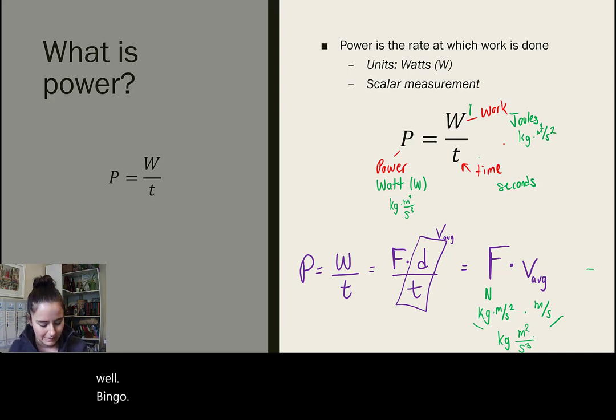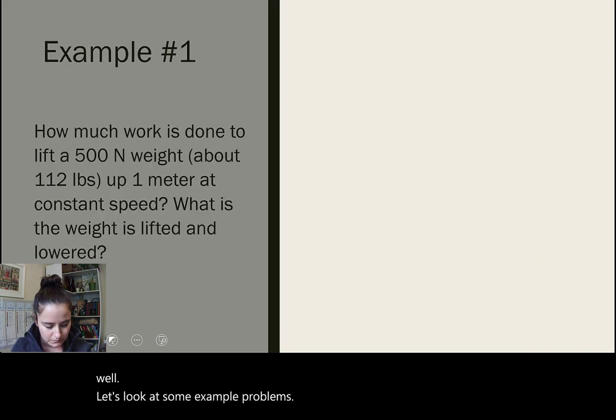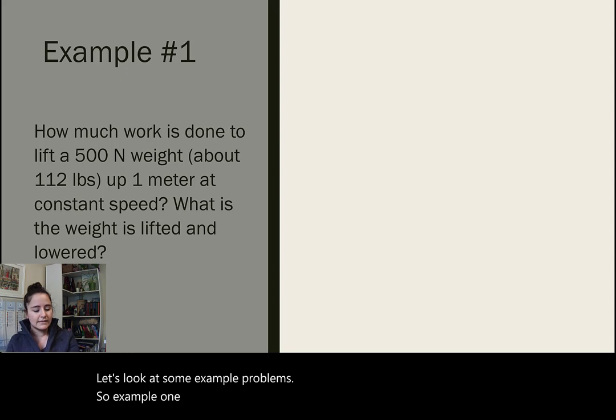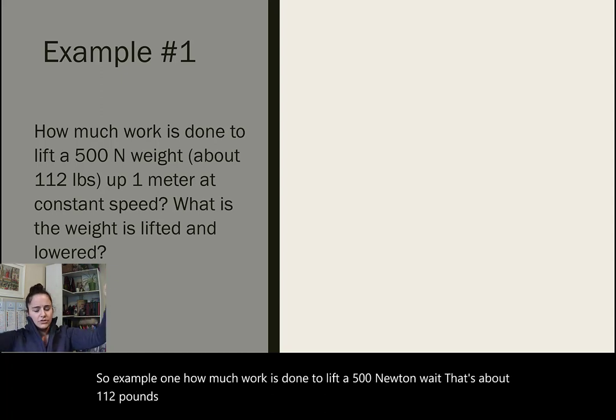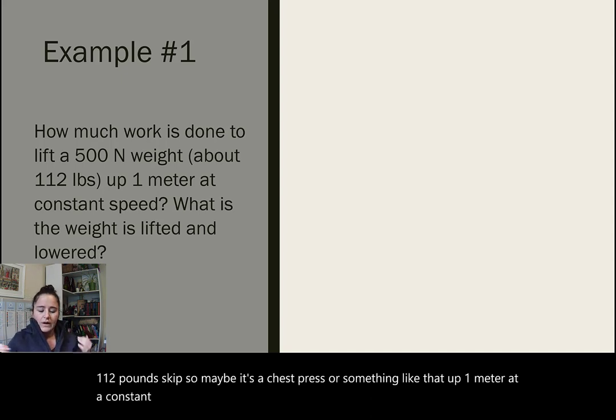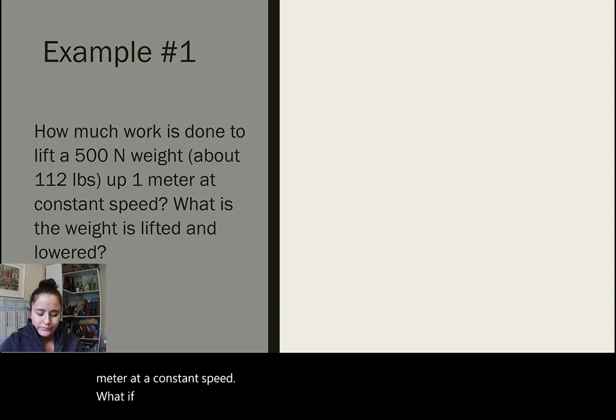Let's look at some example problems. So, example one. How much work is done to lift a 500 newton weight? That's about 112 pounds. Maybe it's a chest press or something like that. Up one meter at a constant speed. What if the weight is lifted and lowered?